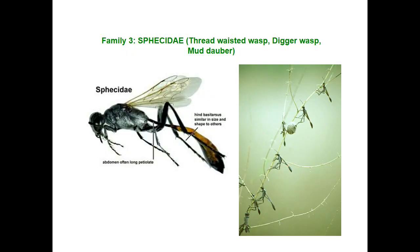The next family is Sphecidae — the thread-waisted wasp, digger wasp, or mud-dauber. The lateral extension of the pronotum forms a lobe-like structure, which is absent in hornets or Vespidae. You can see a distinct petiole-like structure between the thorax and abdomen. Eggs are laid in a paralyzed or killed host.